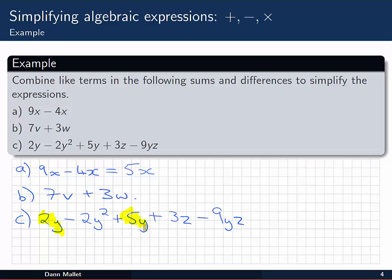2y and 5y, of course they're going to be able to be combined because they're both multiples of y. We then have y squared, well y squared is not the same as y, so we can't combine that one with our 2y and 5y. Similarly 3z and 9yz, none of these can be combined. So essentially what we've got to do is just combine the highlighted terms and leave the rest of them as they are. So we end up with 7y minus 2y squared plus 3z minus 9yz. And that's as simple as we can make that expression.